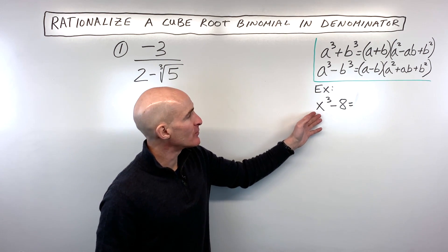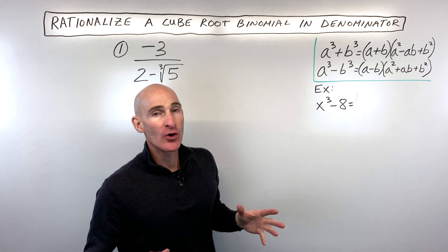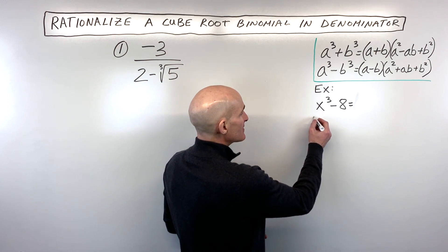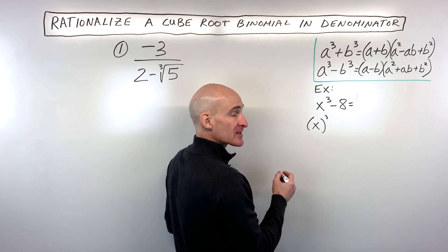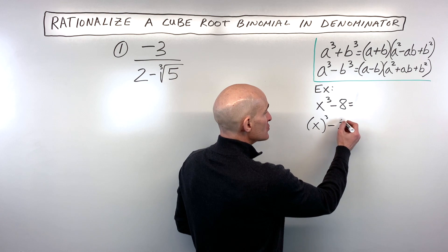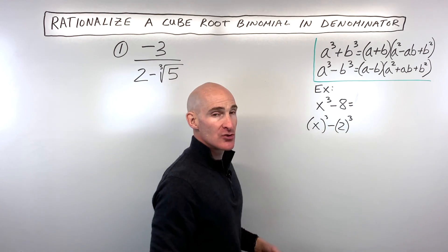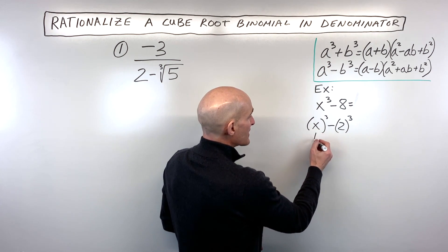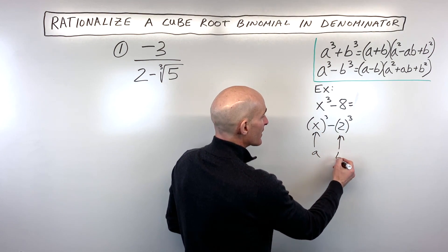Let's take a simple example like x cubed minus eight. We recognize this as a difference of two cubes because x cubed is x times x times x, and eight is two times two times two, or two the quantity cubed. So in our formula, x is going to be our a value, and two is going to be our b value.